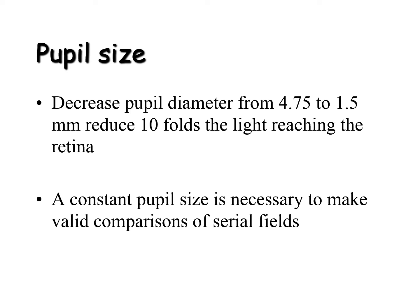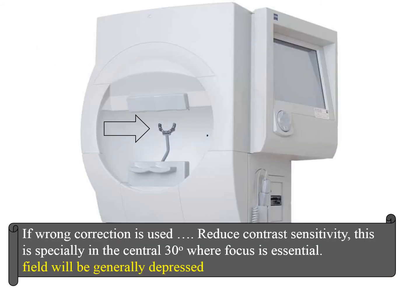Using the correct refractive correction is quite important. If a wrong correction is used, or no correction at all, this will reduce contrast sensitivity. This is especially the case when examining the central 30 degrees, where a generalized depression of the field will result.